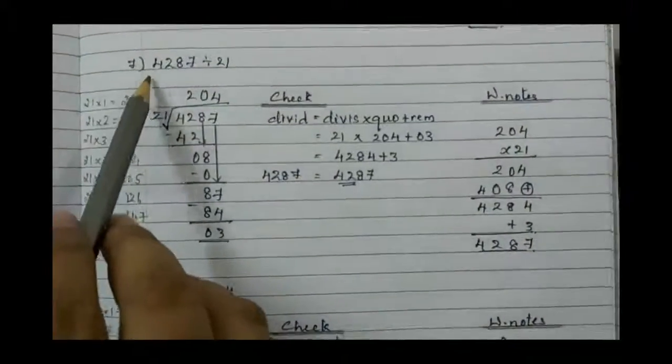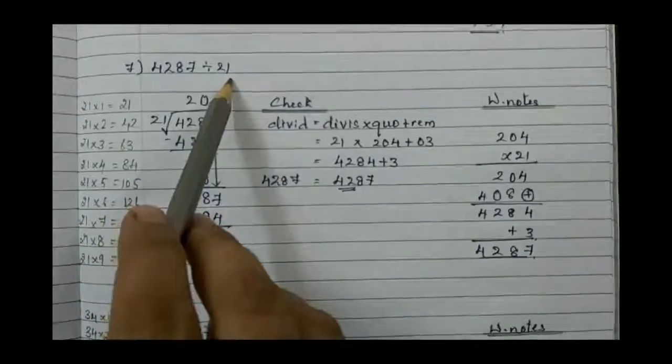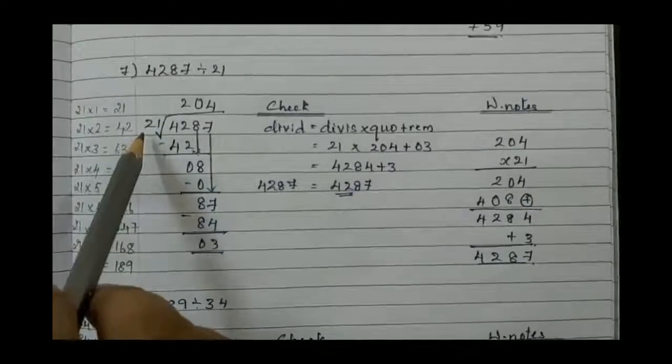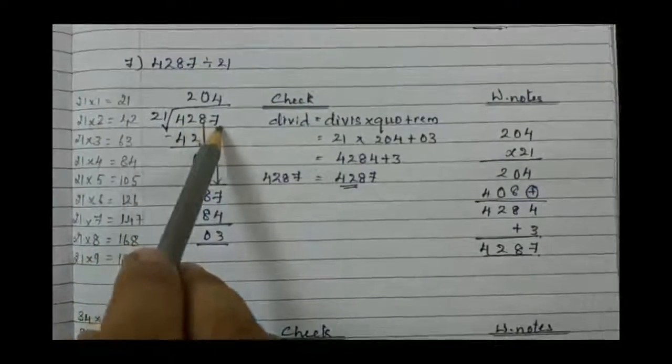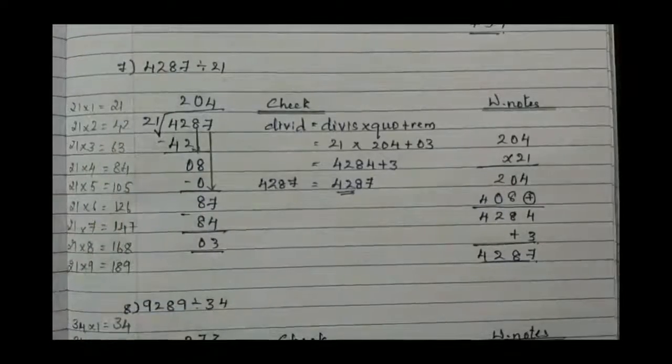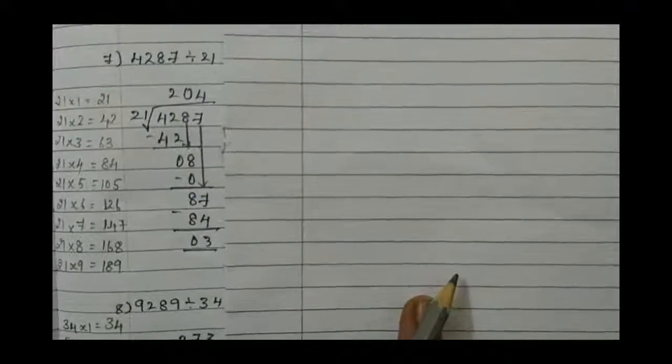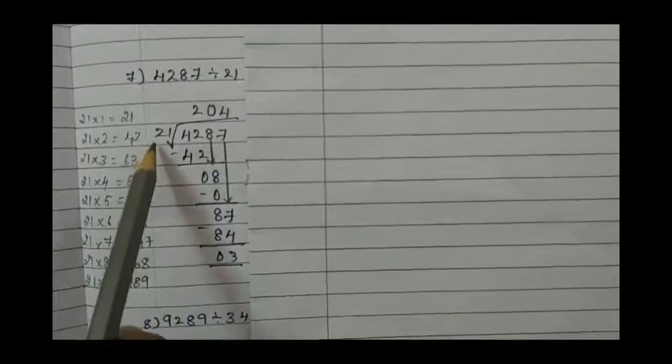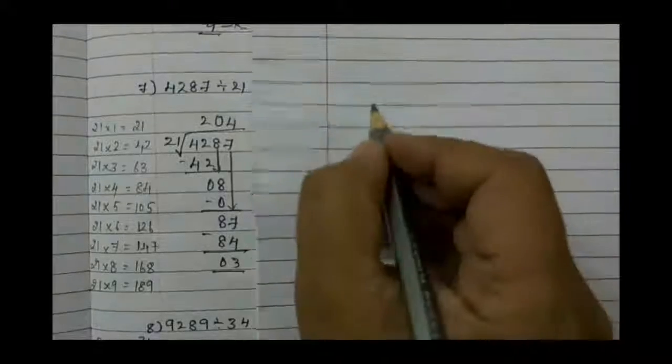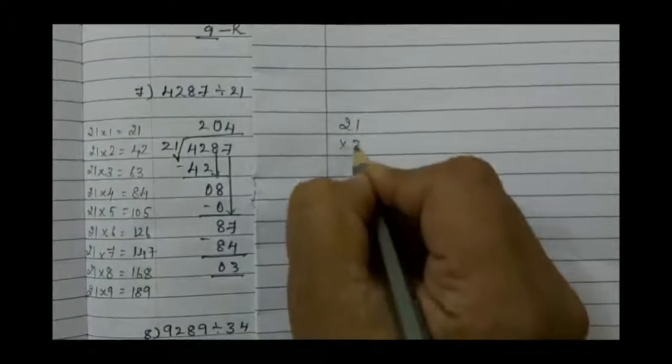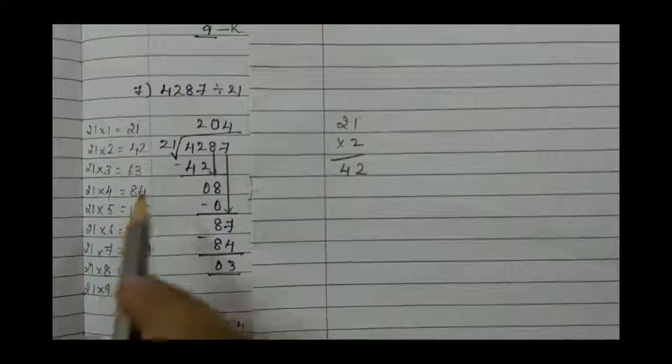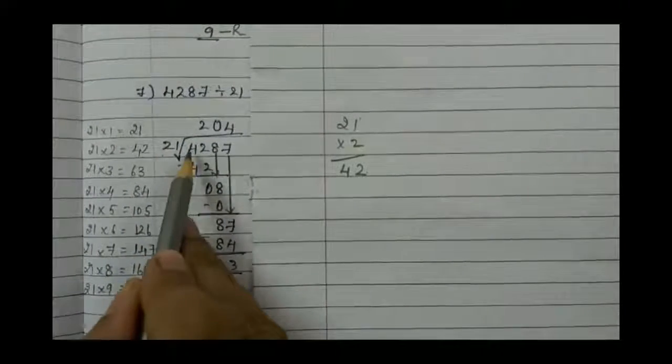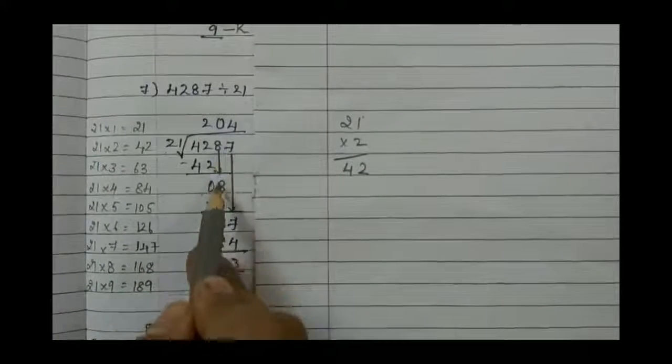Question number 7: 4,287 divided by 21. We are going to divide by 21, so we should know table 21. If you don't know how to find it, let me tell you the easiest way: by multiplication. 21 times 1 is 21, 21 times 2—let's multiply 21 into 2: 2 times 1 is 2, 2 times 2 is 4. We get 42. 42 minus 42 gives 0. Bring 8 down.